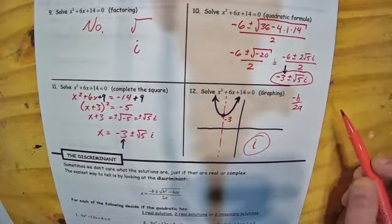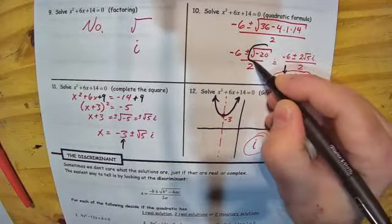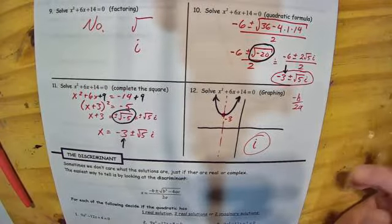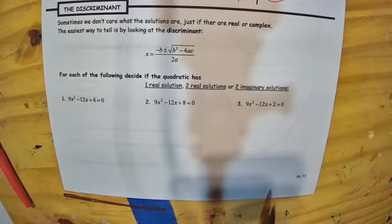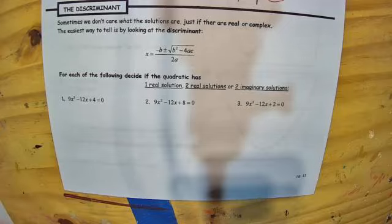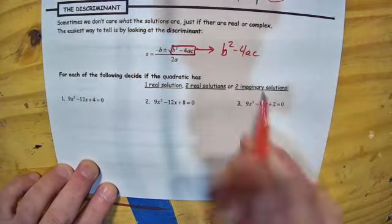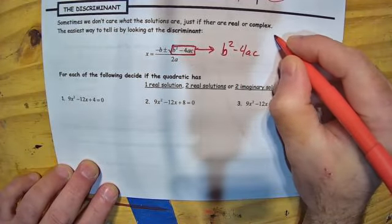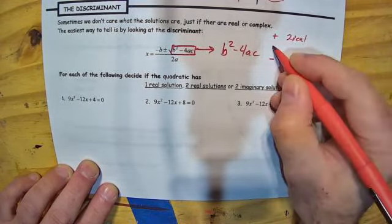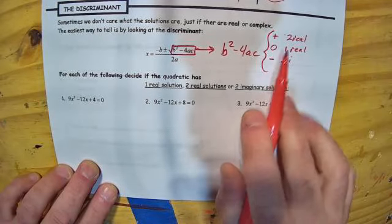The next thing we want to talk about is the discriminant — how could we tell we were going to get i in this problem? We could see it when we tried to take the square root of negative 20, or negative 5 in the other problem. The discriminant is b squared minus 4ac. If it's positive, we get two real solutions. If it's negative, we get two imaginary solutions. If it's zero, we get one real solution. We're being asked to figure out whether solutions are real or imaginary, and if real, whether it's one or two.